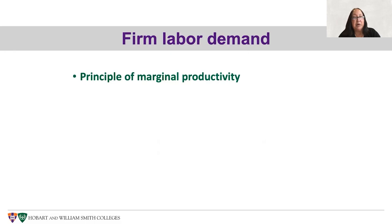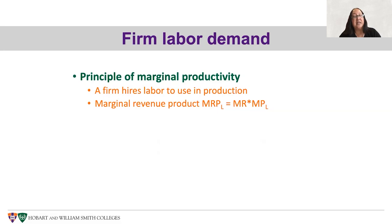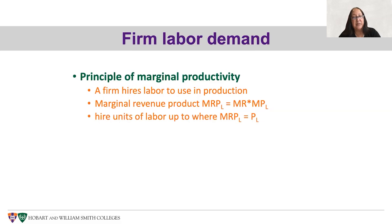What causes firm labor demand? One thing you've already probably learned in Unit 5 is about the principle of marginal productivity. A firm hires labor to use in production — it's a derived demand — and they decide to continue to hire labor based on what the marginal revenue product (MRP) of labor is. MRP of labor equals marginal revenue times the marginal product of labor: how much additional revenue am I gathering per unit sold times the number of units the marginal worker can create. The firm hires units of labor up to where the marginal revenue product of labor equals the price of labor.